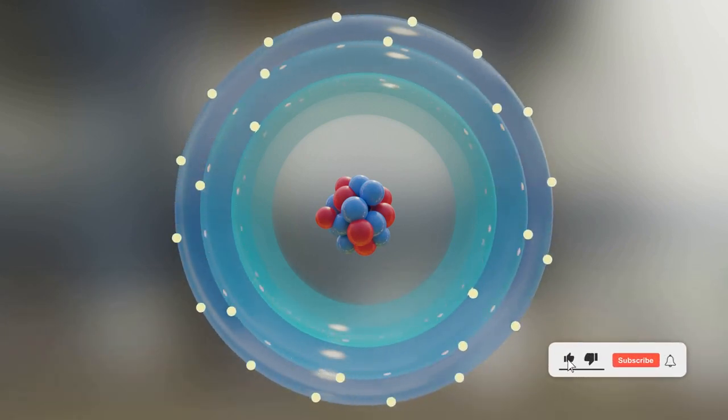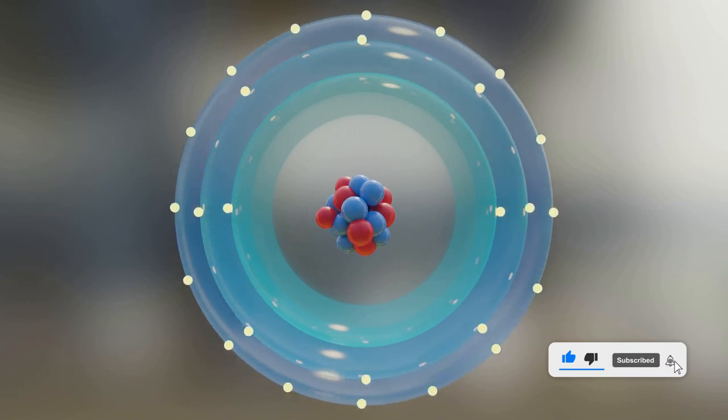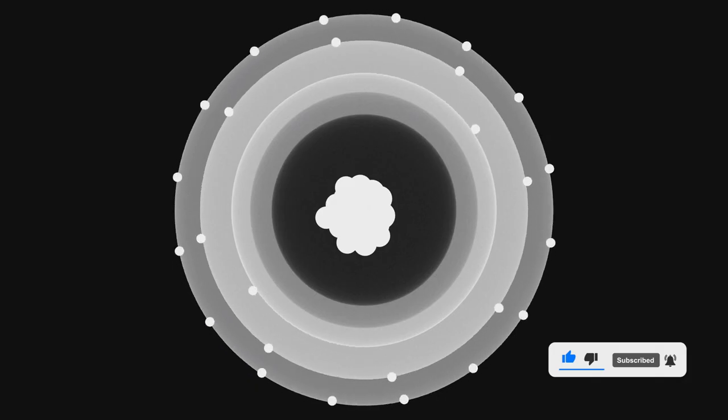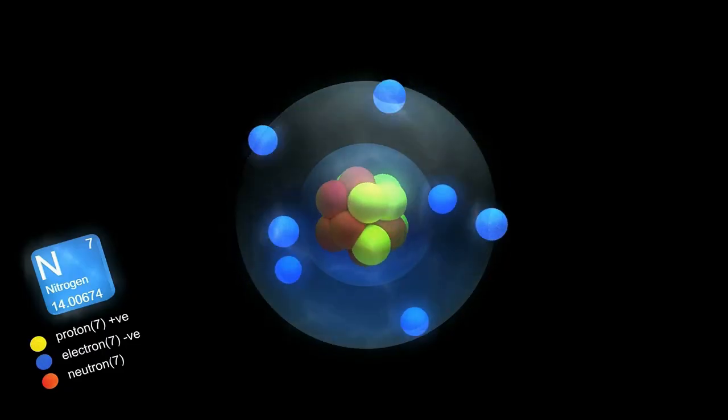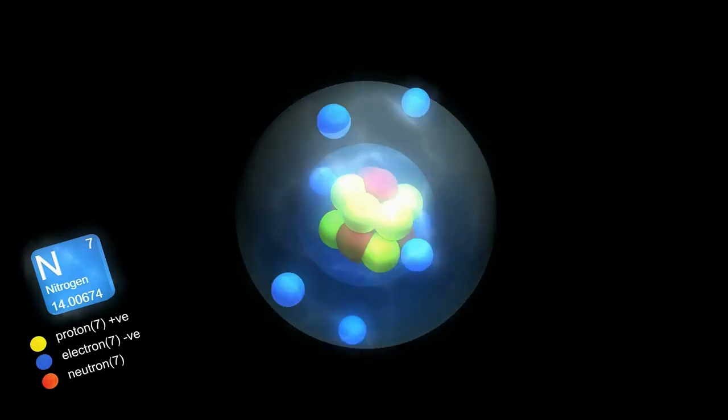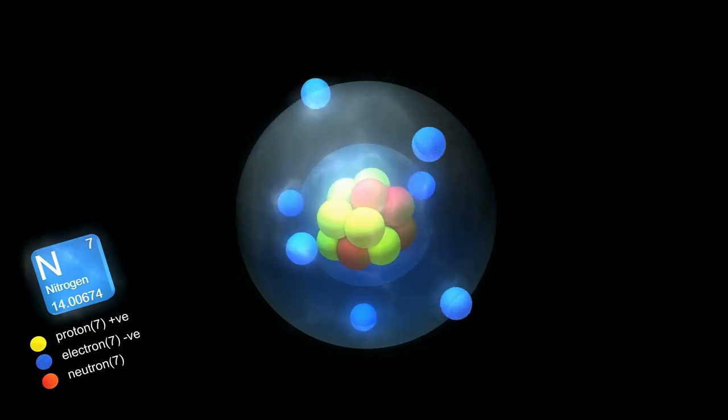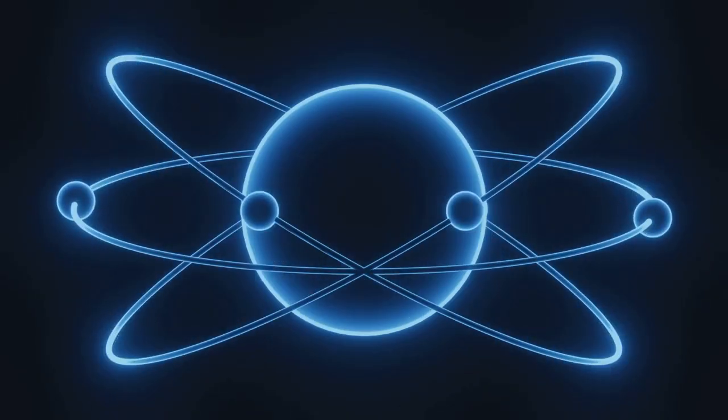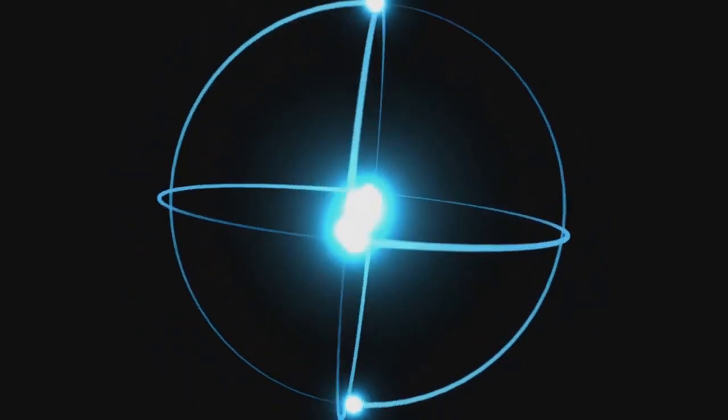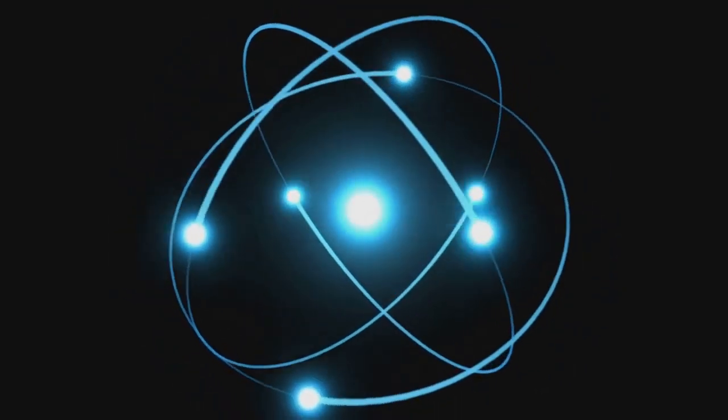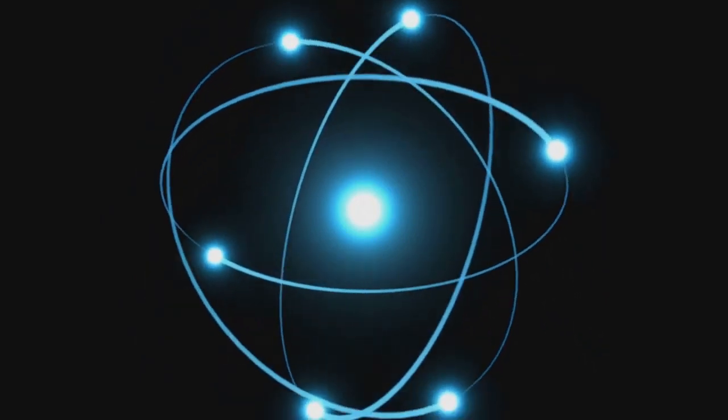Picture an atom as a tiny solar system. At the heart or nucleus of this system, we find protons and neutrons huddled together. Protons carry a positive charge, while neutrons are neutral, meaning they have no charge at all. Encircling this nucleus, much like planets around the sun, are electrons. These tiny particles are negatively charged and are always on the move, whizzing around the nucleus at incredible speeds.